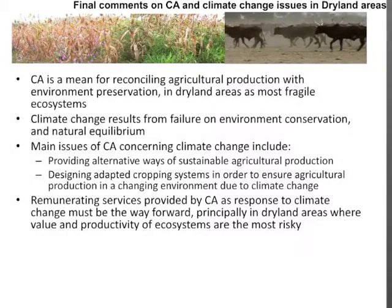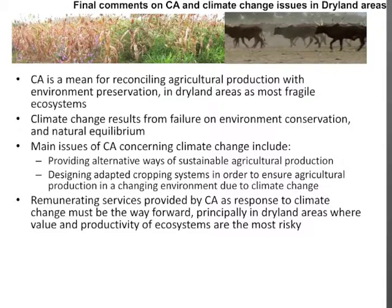To conclude, conservation agriculture is a means for reconciling agricultural production with environment preservation in dryland areas as the most fragile ecosystems. Climate change results from failure in environment conservation and natural equilibrium. The main issues of CA concerning climate change include providing alternative ways of sustainable agricultural production and designing adapted working systems to ensure agricultural production in a changing environment due to climate change.